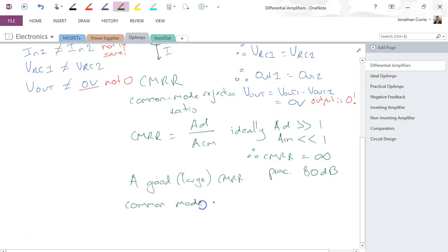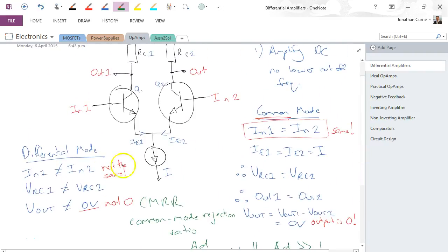So what that basically means is that if you have a good or large CMRR, common mode signals where VN1 equals VN2, output is 0, and differential we get a large gain. So CMRR is a way to describe these two different modes that we can operate this circuit in.